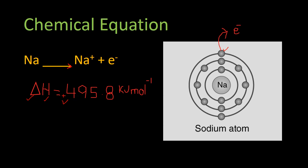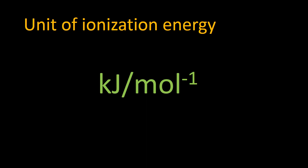Sodium belongs to group number 1, so it loses one electron and changes into a cation. Magnesium belongs to group number 2, so it will lose 2 electrons and its charge will be positive 2. An important short question that comes in exams: the unit of ionization energy is kilo joule per mole (kJ mol⁻¹), where mole inverse represents the number of particles and kilo joule represents the energy required to do the work.